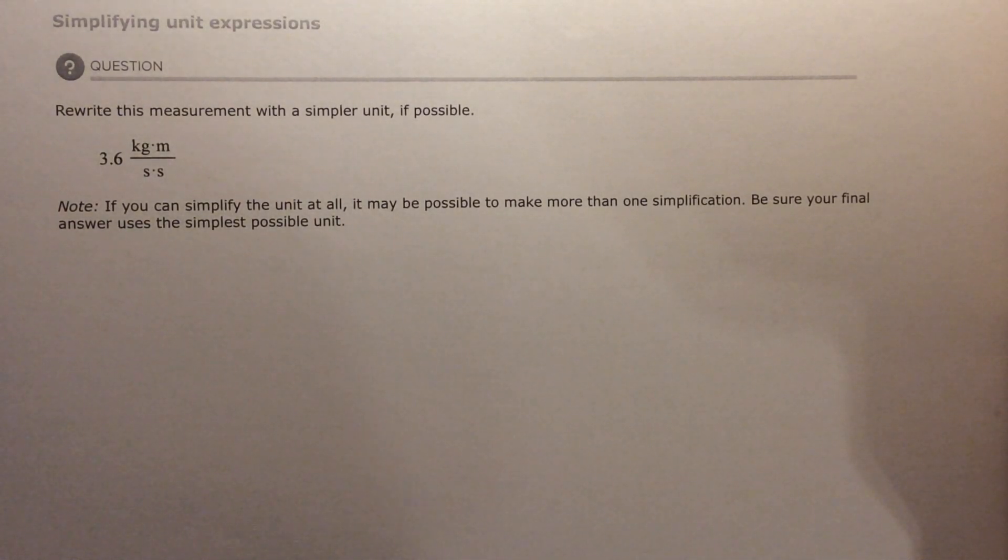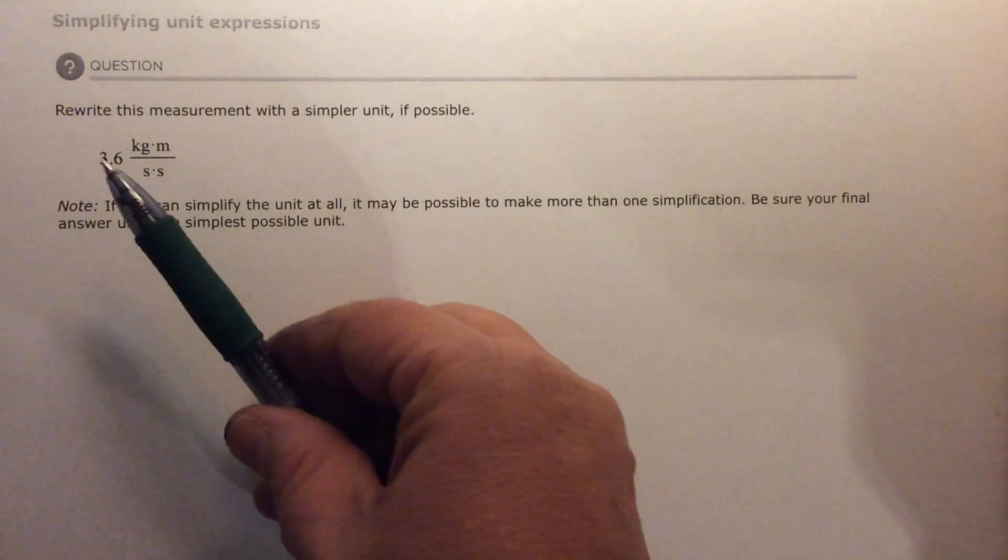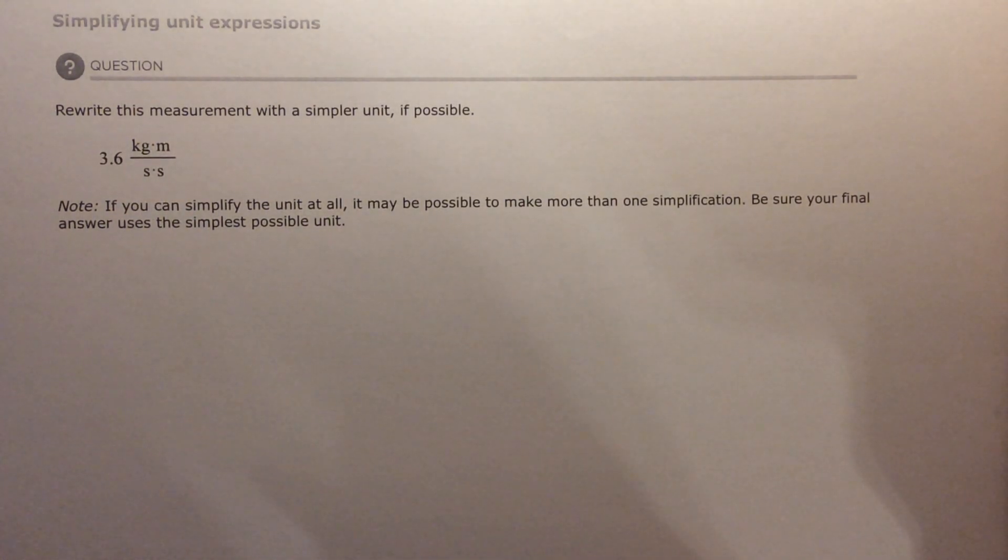This is a very particularly easy example. There would be some that would be a little harder, but in this case, I've got a number. I can't do anything to the number. If I had numbers top and bottom, I could divide, but there isn't. It's already down to its smallest terms. Kilogram. I don't have kilograms on the top and bottom, so I can't cancel anything. I just have to leave it there.